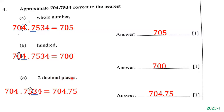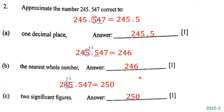Now they want us to approximate 704.7534 correct to the nearest two decimal places. The number in the second decimal place — the hundredths place — is 5, so we circle 5 and underline the number to its right, which is 3. Since 3 is less than 5, we do not round up. We keep 7, 0, 4, 7, and 5, but drop the 3 and 4. The answer is 704.75.